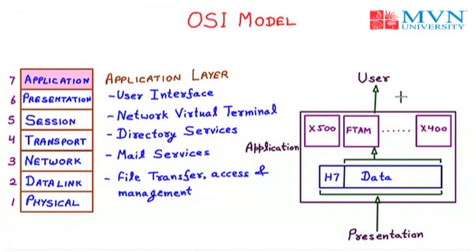In summary, above the application layer we have the user, and below the physical layer we have the wires and media. At the physical layer we have the bit stream; at the data link layer we have frames; at the network layer we have packets; at the transport layer we have segments; at the session layer we have checkpoints; at the presentation layer we have code conversion and translation; and at the application layer we provide services to the user. From user to wire, the system is operated by the OSI model. Thank you.